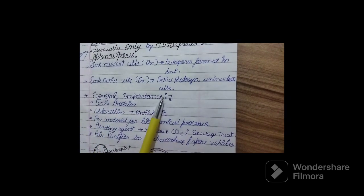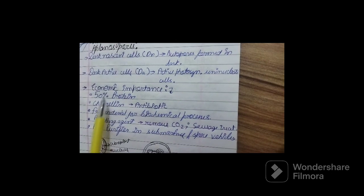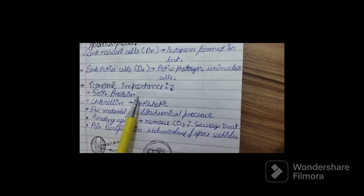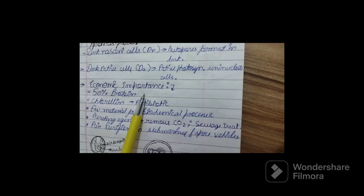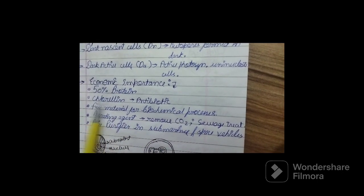Now, talking about the economic importance. The economic importance of Chlorella is that it consists of 50% protein. Thus, it is a good source and rich source of protein. It also yields antibiotic chlorellin.